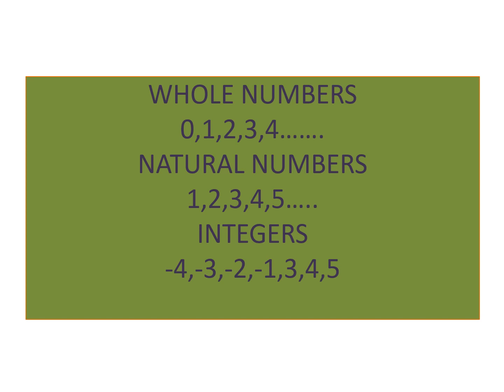In whole numbers we have the numbers starting from 0, 1, 2, 3 and so on. In natural numbers we have the numbers starting from 1, 2, 3 and so on. In integers, the whole numbers and natural numbers together come, and they will have positive and negative signs.